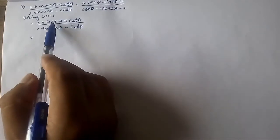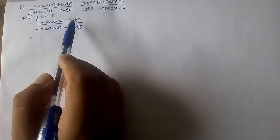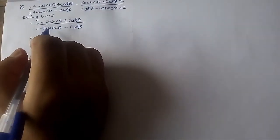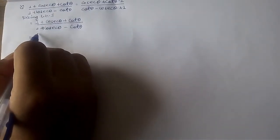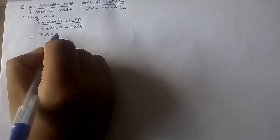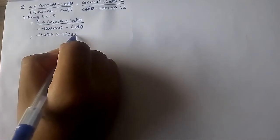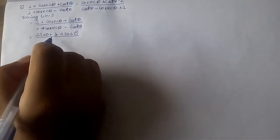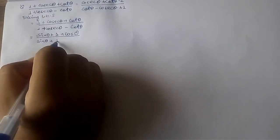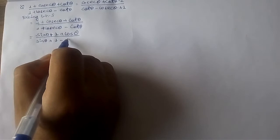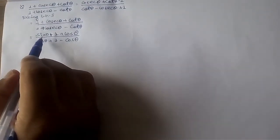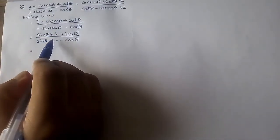What we do is change cosec in terms of 1 over sin and cot in terms of cos over sin, the same in the denominator. If we take LCM, we will get sine theta plus 1 plus cos theta divided by sine theta plus 1 minus cos theta.